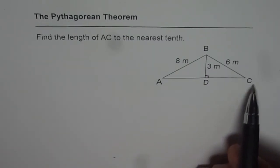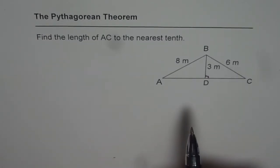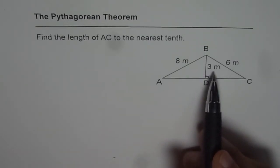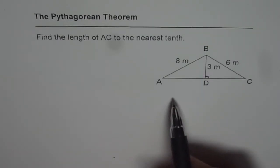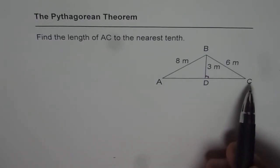We are given a triangle ABC with two sides. AB equals 8 meters, BC equals 6 meters, and an altitude of 3 meters. We need to find the length of the side AC.